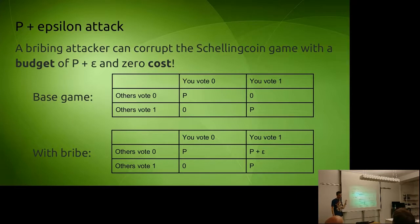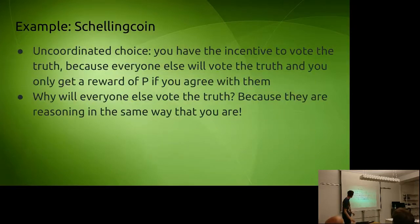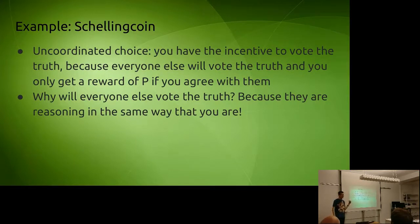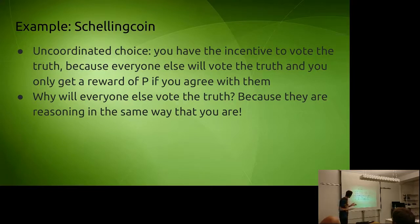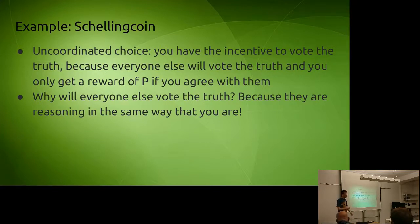In a coordinated choice model, the incentive is neutral: if N participants all vote for A, they get a reward of N times P; if they all vote for B, they also get N times P. If participants care about the network's long-term reputation, you could imagine they get a slightly higher reward if A wins and A is the correct answer — a public good spread across all participants. Including these goodwill factors, the coordinated choice model does have some security, but it's weak.